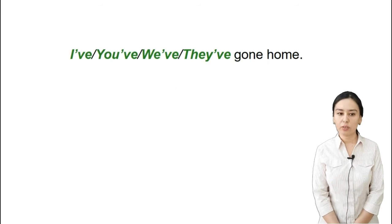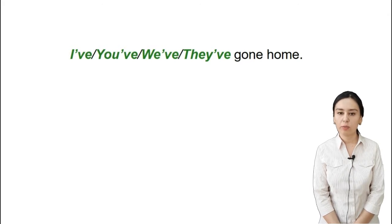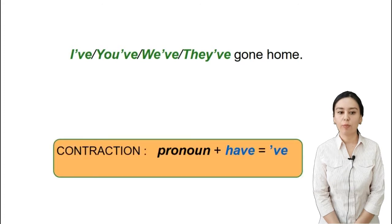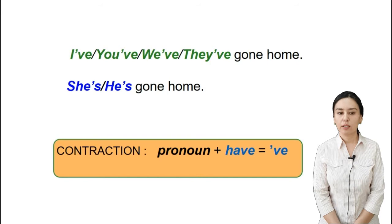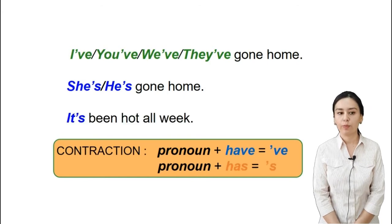Next, let's look at contraction or shortened forms. You can see: 'I've gone home', 'You've gone home', 'They've and we've gone home'. But the third person singular has a different form: after the pronoun, it's 'she's gone home', 'he's gone home'. And 'It's been hot all week'.